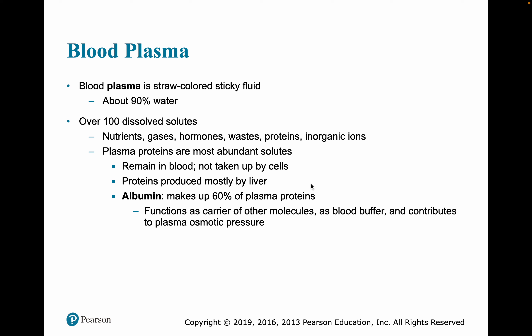Plasma is a straw-yellowish, sticky fluid, about 90% water, as are most body fluids. There are at least 100 dissolved solutes within it; important ones include nutrients, gases, hormones, waste products, proteins, and inorganic ions. Plasma proteins are the most abundant solutes — they remain in the blood and are not taken up by cells. Produced primarily by the liver, the largest fraction is albumin, which functions as a carrier of other molecules, as a buffer, and contributes to osmotic pressure.